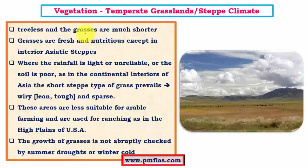In savannah, grasses are lush green in summer due to good rainfall but go completely dry in winter due to dry climatic conditions. In steppe climates there is no such abrupt change — grasses maintain their physical properties throughout the year irrespective of varying climatic conditions. The growth of grasses here is not abruptly checked by summer droughts or winter cold. As we move poleward the grasses give way to conifers, as the taiga type of climate starts after the steppe zone.